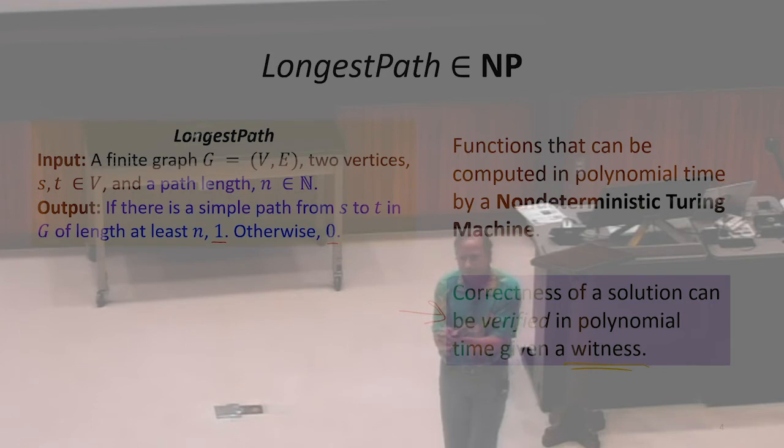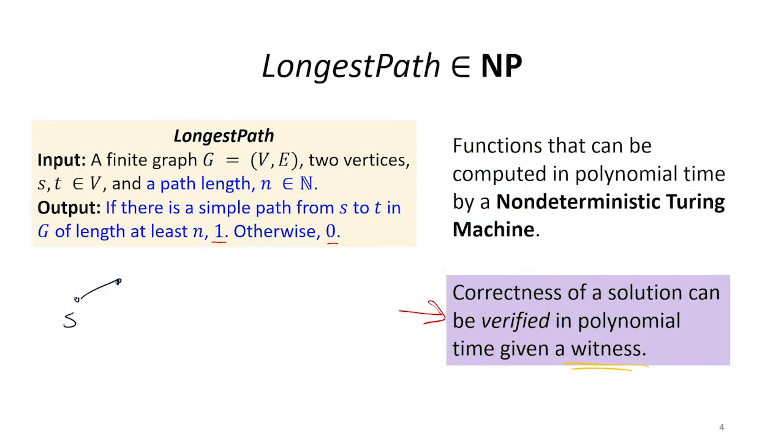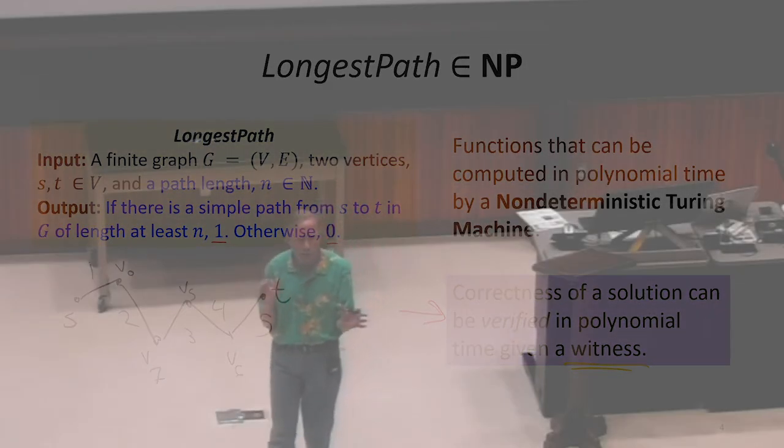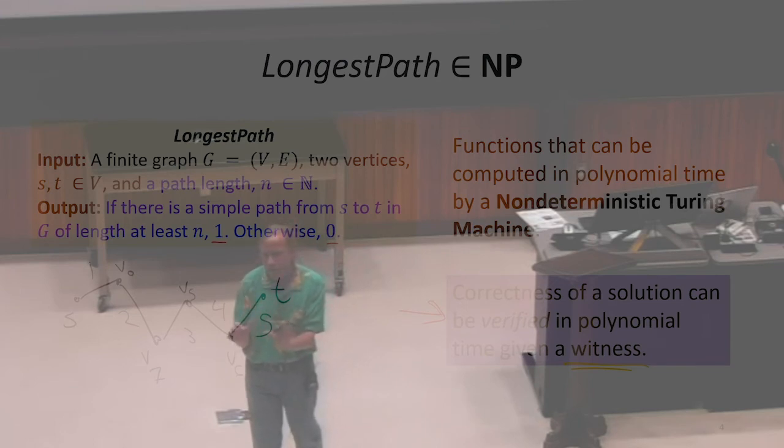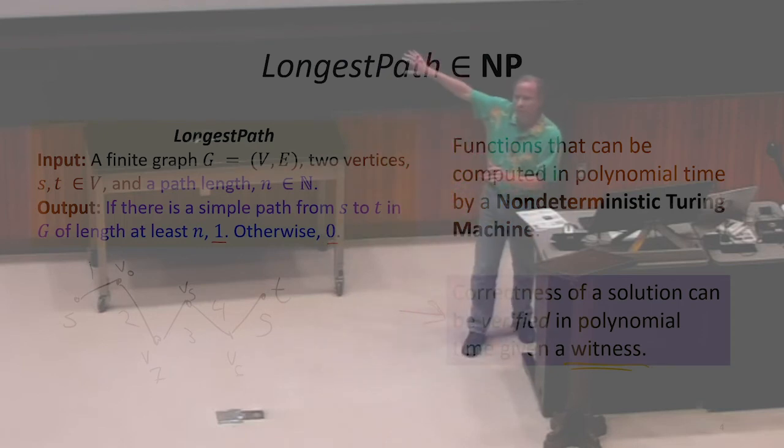So what would the witness be? What would convince you there is a path of length N? Yeah. Yeah, good. The witness is the path. Someone gives you the path and says, this is my witness. I'm going to start at node S. I'm going to go through these nodes. And I'm going to add up node T. And this is a path of length five. And you're going to check that these are all different. You could very quickly check if that's a valid path. You'd have to check that those edges are in the graph. You'd have to check that it doesn't repeat a vertex. You'd have to check that it starts at S and ends at T. Those are all things we can check in polynomial time pretty easily.